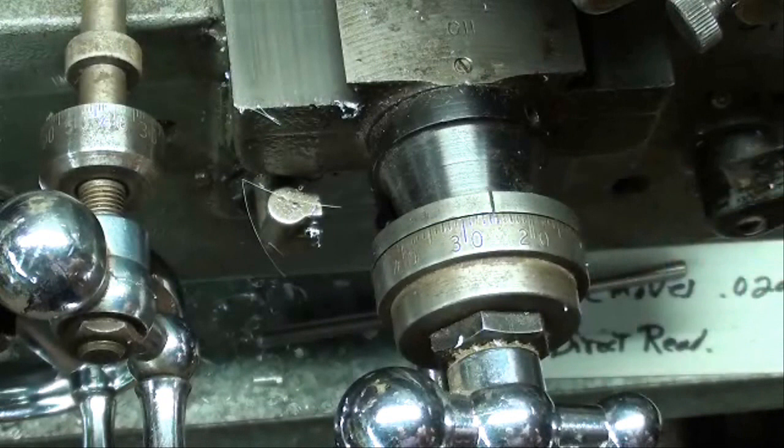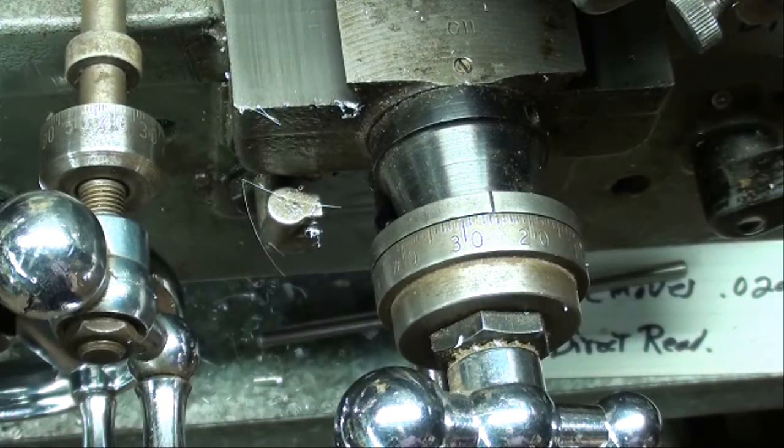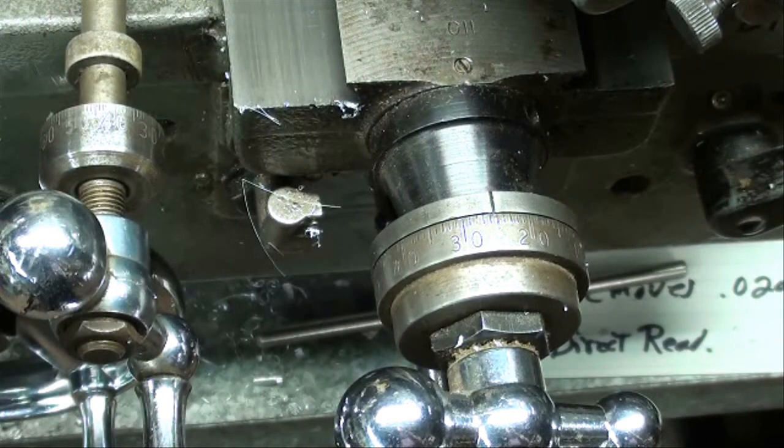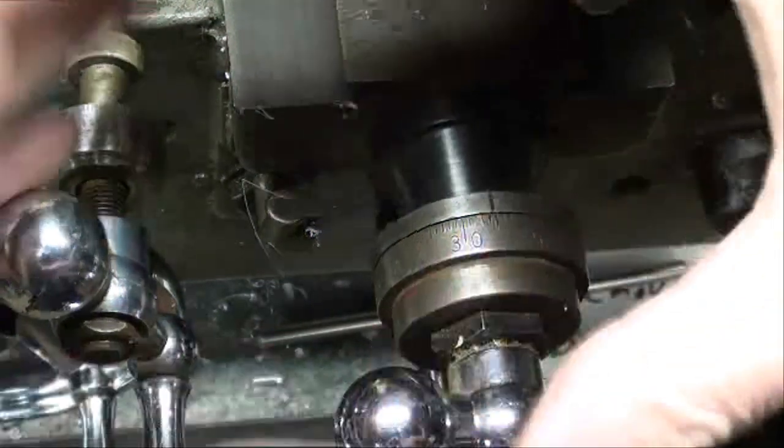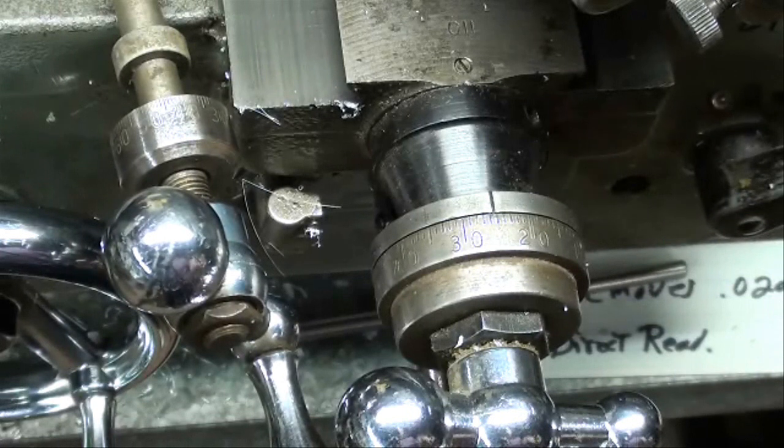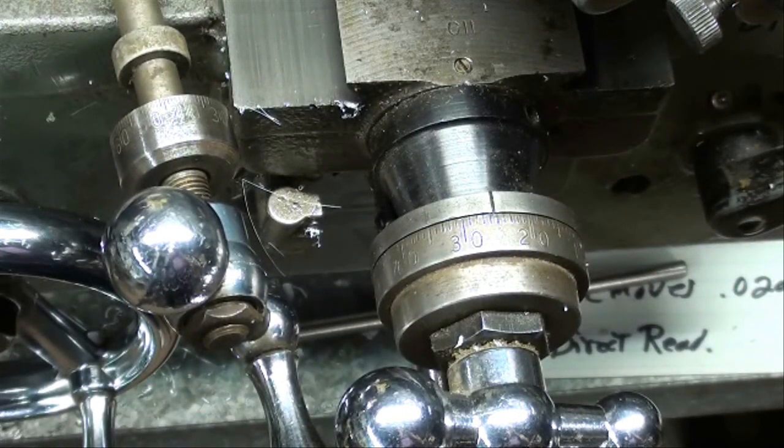Now, I once worked on an English-built, British-built turret lathe, and I'll swear the dials on it were about three and a half inches in diameter. And it was so easy to read. You can read it from halfway across the room.